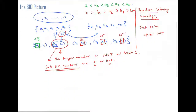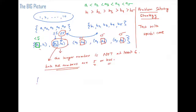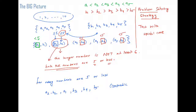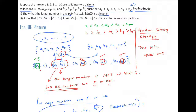So how many numbers are five or less? We have a2 and b2 (both ≤ 5 by assumption), plus a1, b3, b4, and b5 — that's six numbers which are five or less. But that's a contradiction, because there are only five numbers from 1 through 5. So if we assume the larger number in a pair is not at least six, we run into a simple counting contradiction.